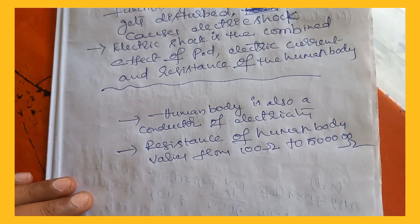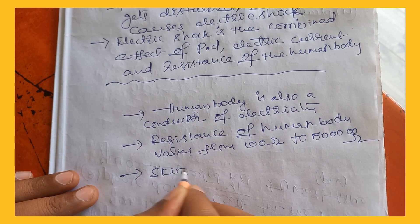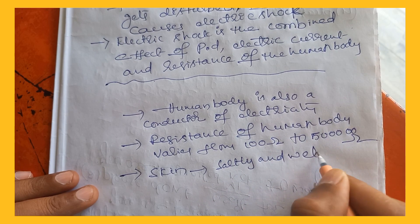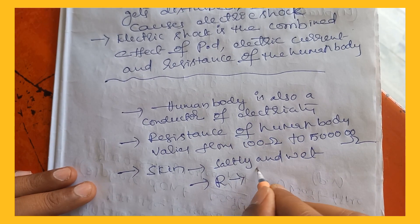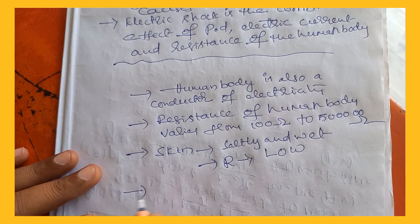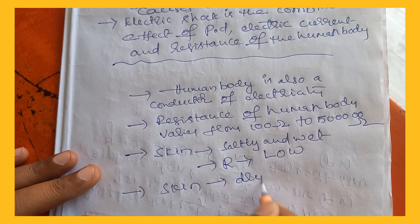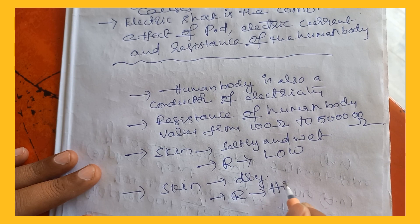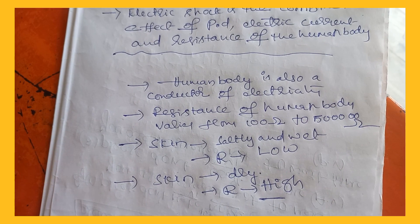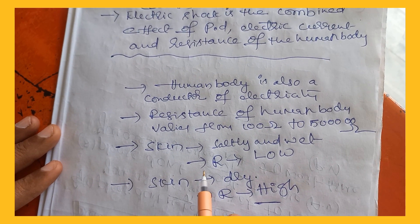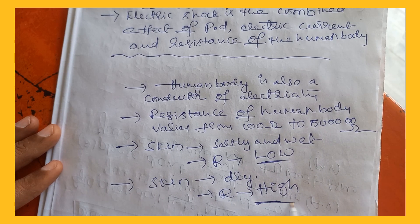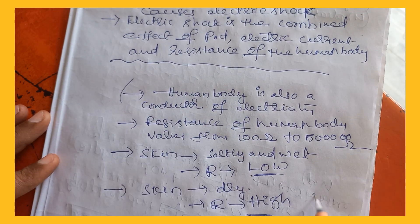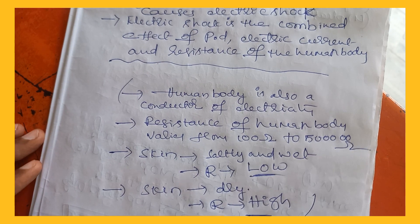These values of 100 ohms and five lakh ohms are measured when our skin is salty and wet — in that case, resistance in the human body is low. When our skin is dry, resistance in the human body is high. Resistance alters the flow of current: when we have low resistance, current flows easily; when we have high resistance, current flow can be prevented. This is a general understanding of the resistance of the human body.